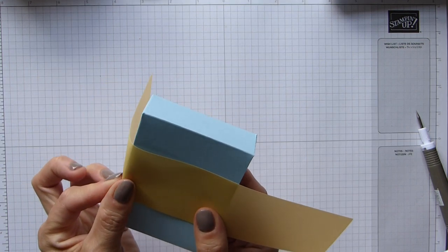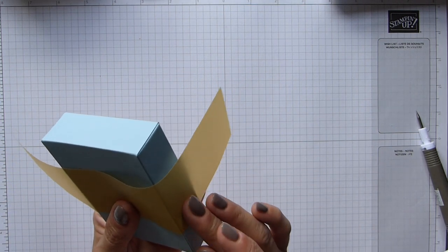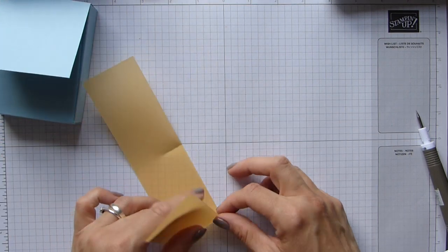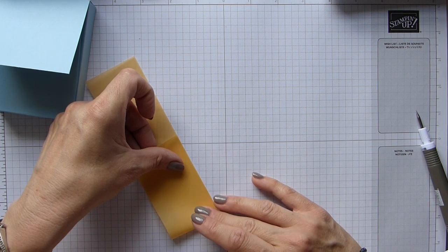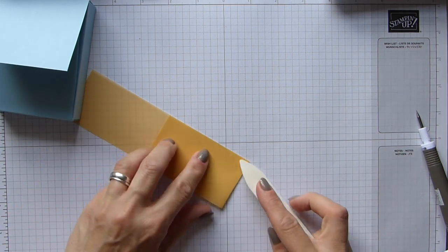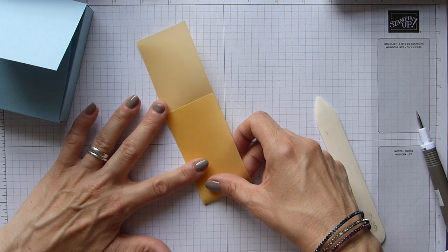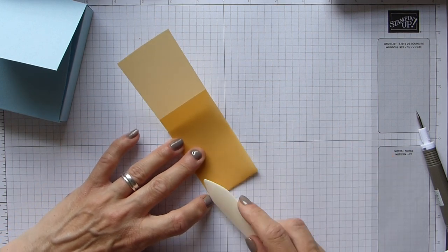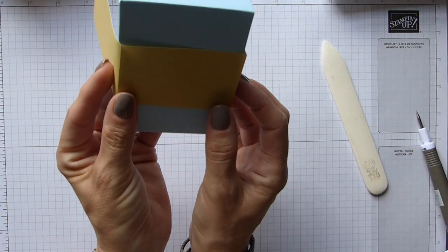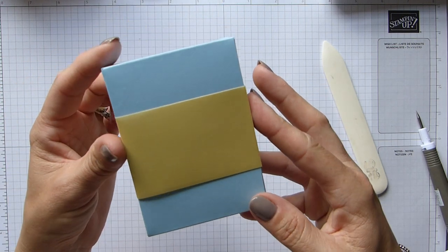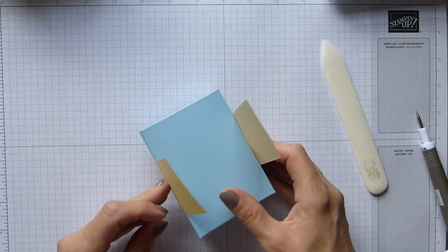Get your strip of vellum, line it up with the bottom of that piece of card, eyeball it to be roughly in the center, then fold that over and pinch on both sides. Make sure your sides line up, then reinforce that crease with your bone folder.